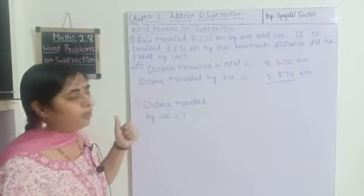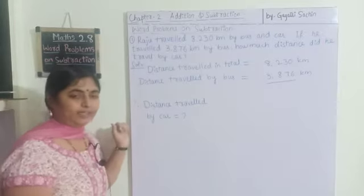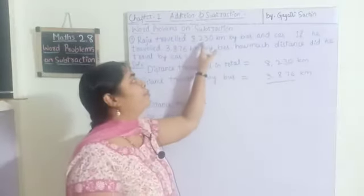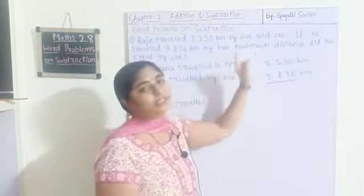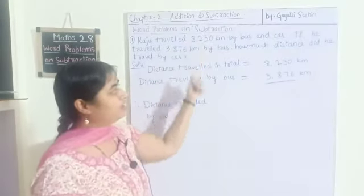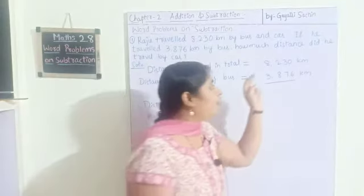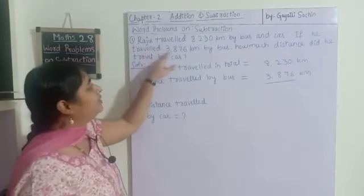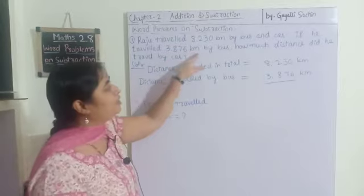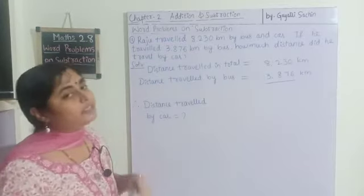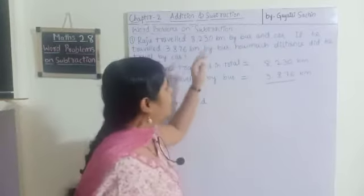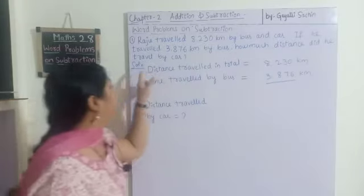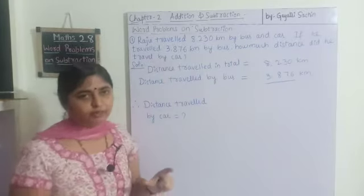We will take an example. First one: Raju traveled eight thousand two hundred and thirty kilometers by bus and car — he has traveled this total distance in both vehicles. If he traveled three thousand eight hundred and seventy-six kilometers by bus, the rest of the distance will be by car only, because he traveled only by these two vehicles.